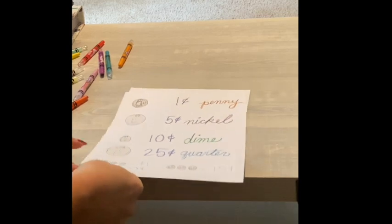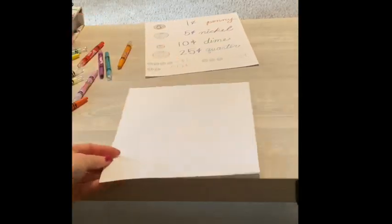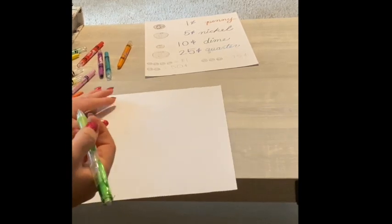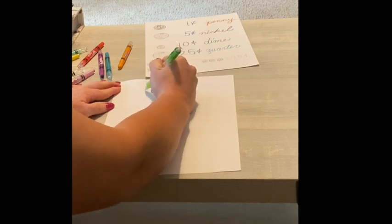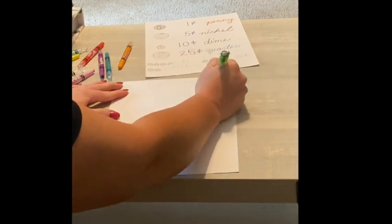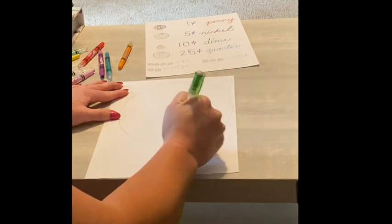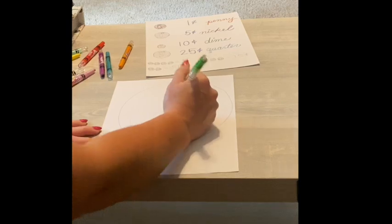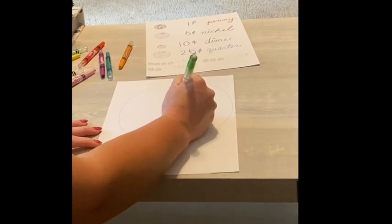So, you might have guessed that our next page is for time. So, what you're going to do is you're going to make a big circle. Okay. Big circle. It doesn't have to be perfect. You need to get something to trace. You can get something to trace. Okay. Then, in the middle, make a dot. So, your circle should look like this.